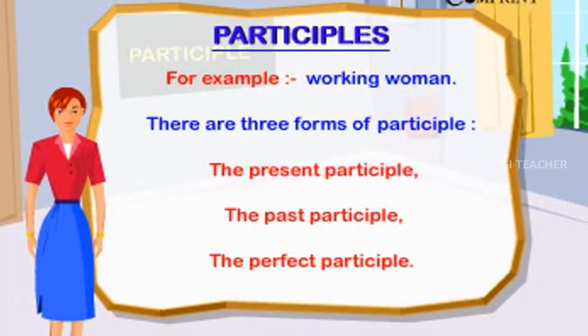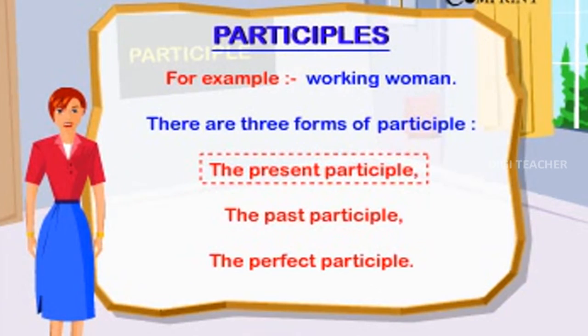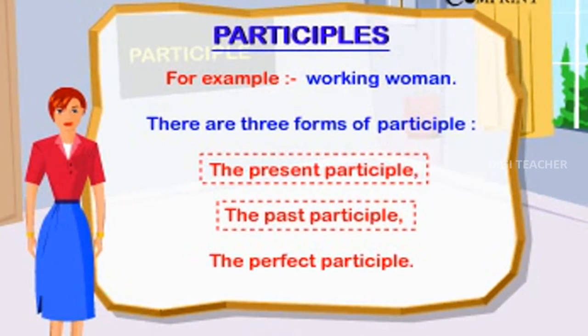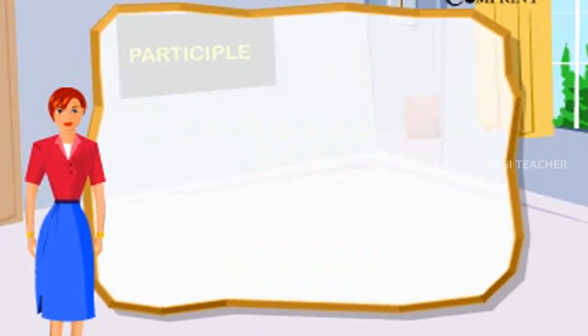Participle. There are three forms of participle: the present participle, the past participle, and the perfect participle.